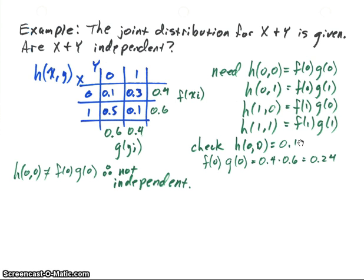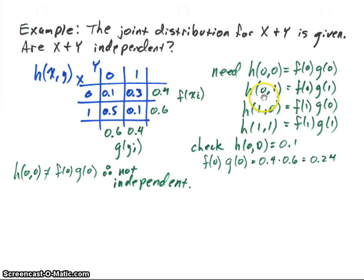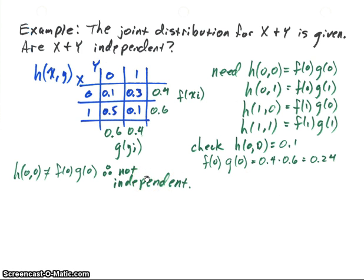0.4 times 0.6 equals 0.24, and that's not equal to the 0.1 that we want. At that point we can just stop — we don't have to do any more, because we know that the two random variables are not independent. Now, if that first check had been true, we'd have to go through all the values and determine if they're all equal to each other — H(0,1) equals f(0) times g(1), and so on. But it's not independent, so we can stop.